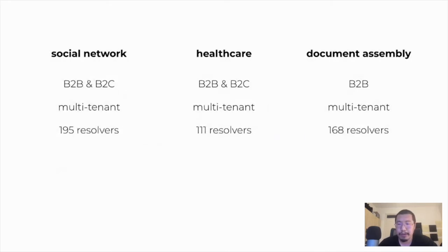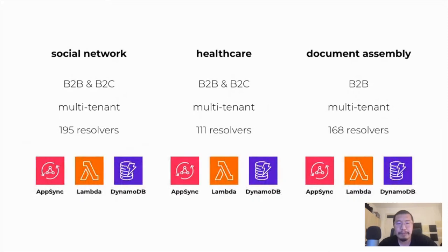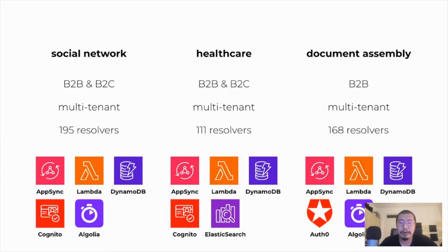As a consultant, I've worked on a couple of AppSync projects in the last 18 months across several industries. I built a social network, a healthcare app, and a document assembly system. All have B2B and multi-tenancy requirements. The tech stack was pretty consistent: AppSync, Lambda, and DynamoDB, with Cognito and Auth0 for authentication. For search, Algolia is my preferred choice, but for the healthcare app due to HIPAA requirements we used Amazon Elasticsearch. For all three projects, I used Lumigo to help debug and troubleshoot.